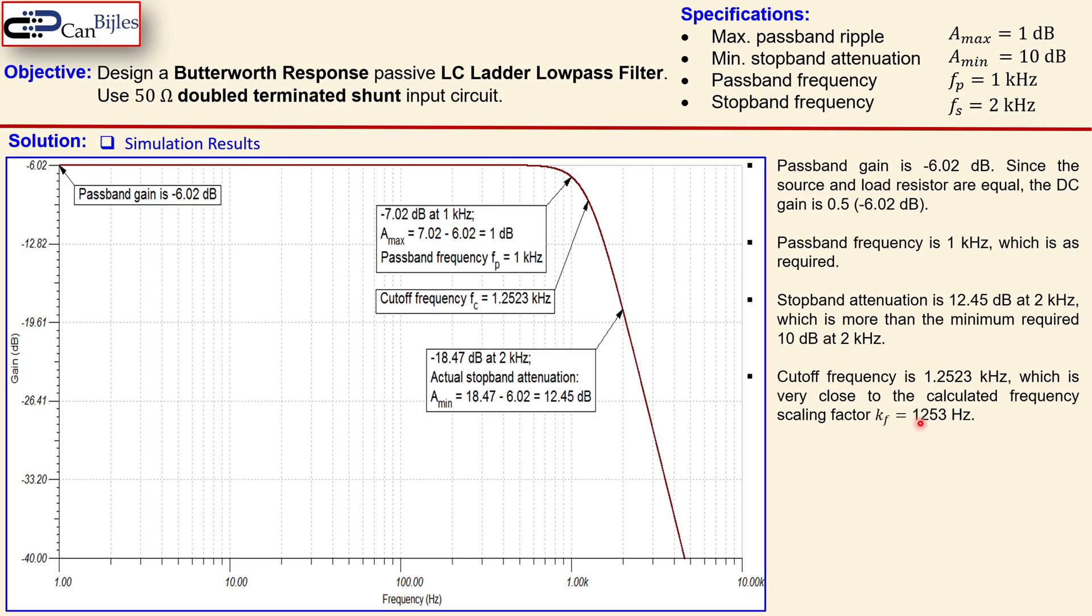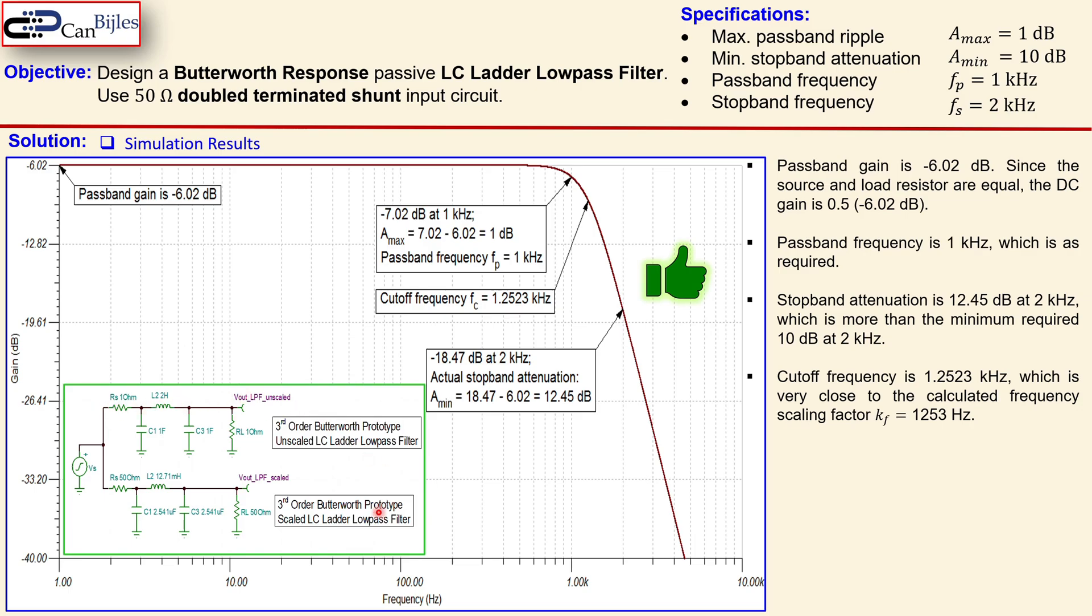Okay, now the cutoff frequency is 1.2523 kilohertz here, and we had the scaling factor, frequency scaling factor was 1253 hertz, so very close what we have calculated, and probably also due to rounding off errors this small difference, so everything is actually correct here.